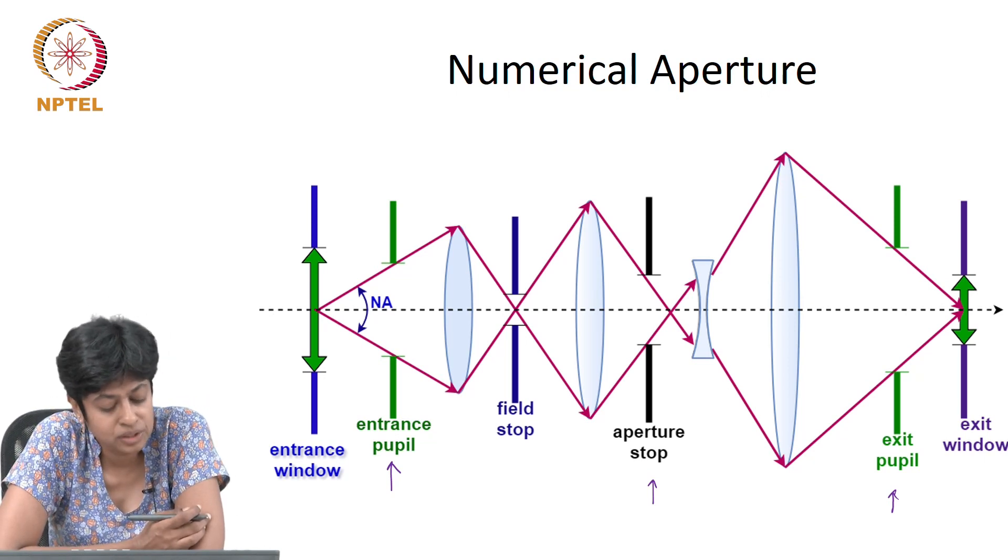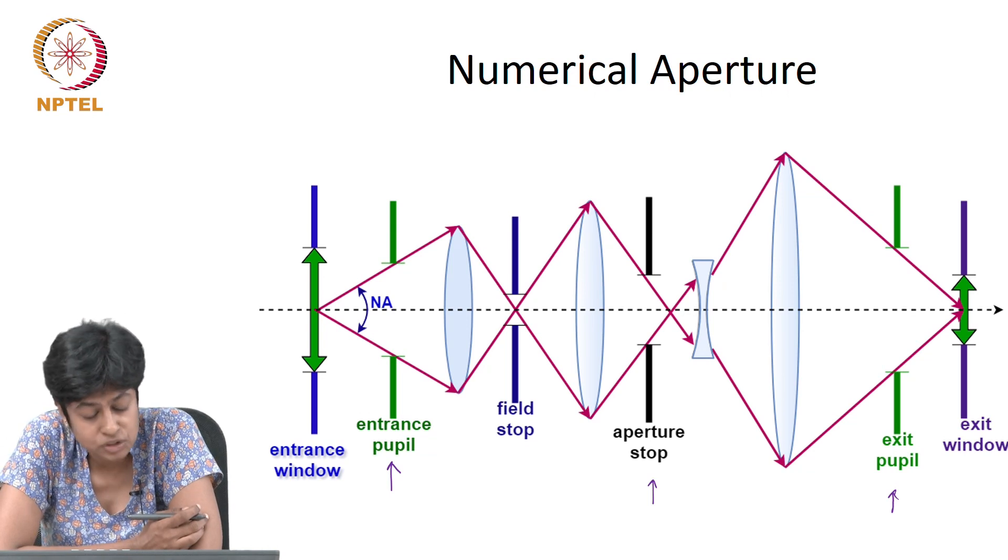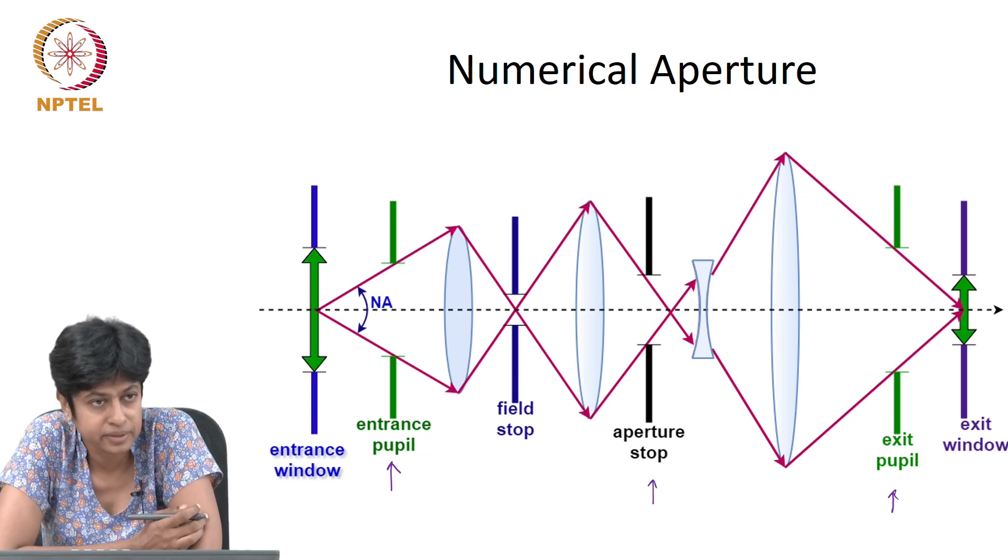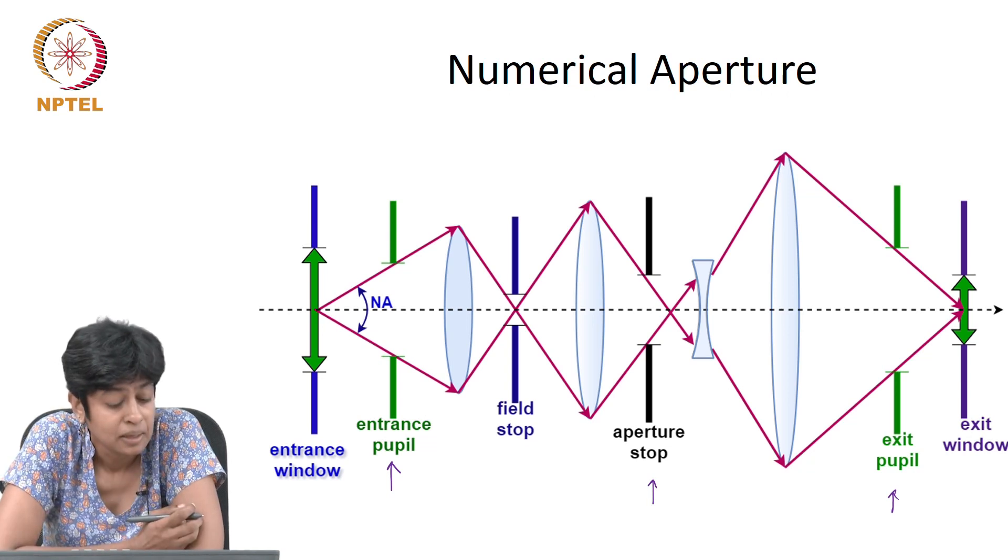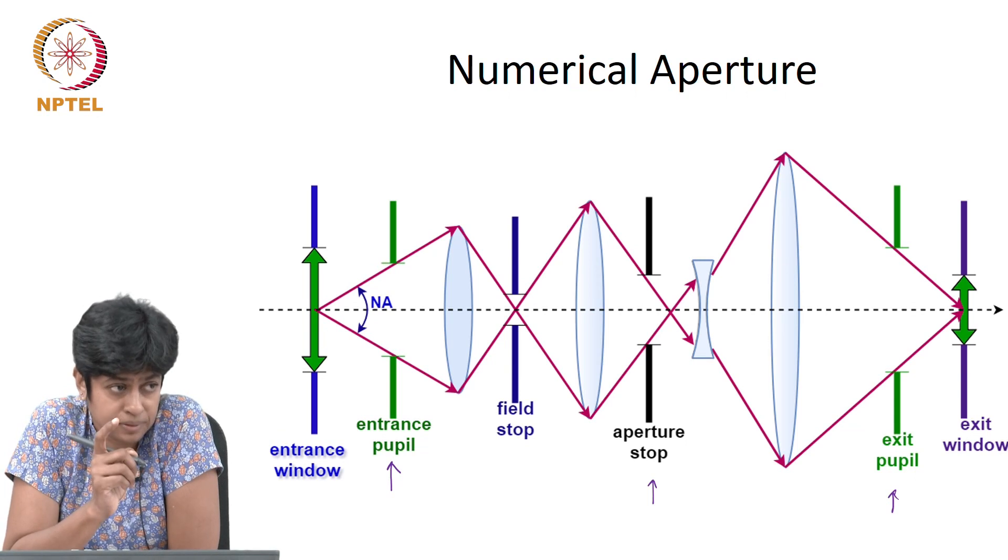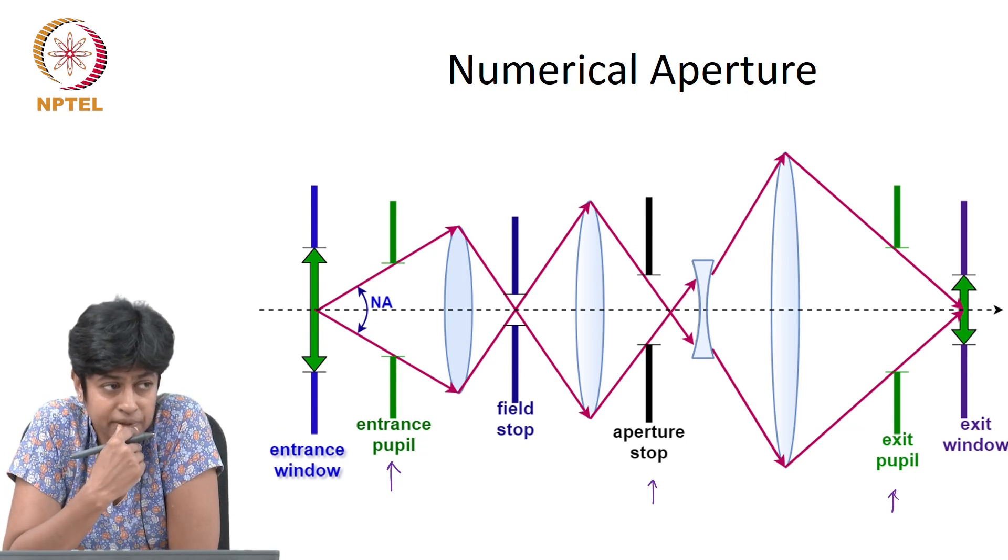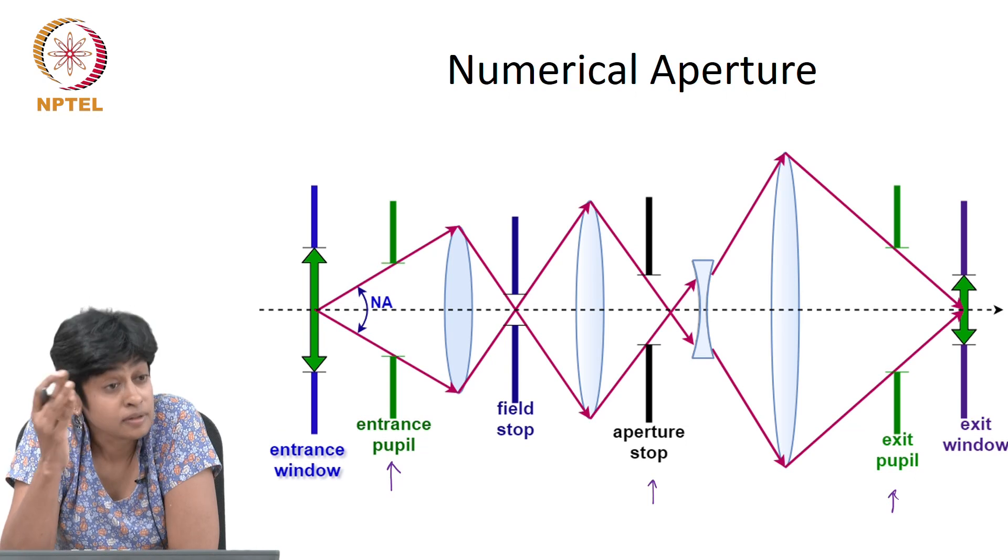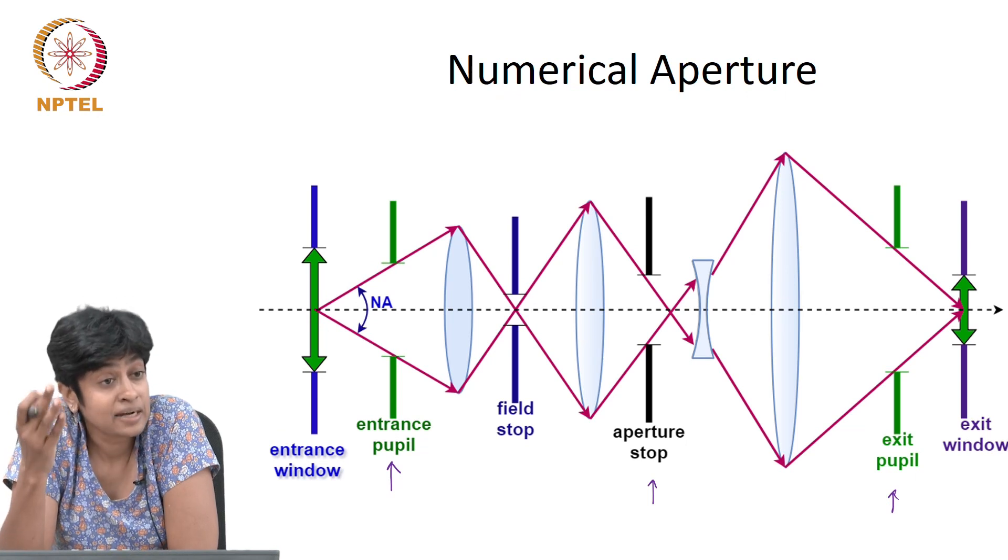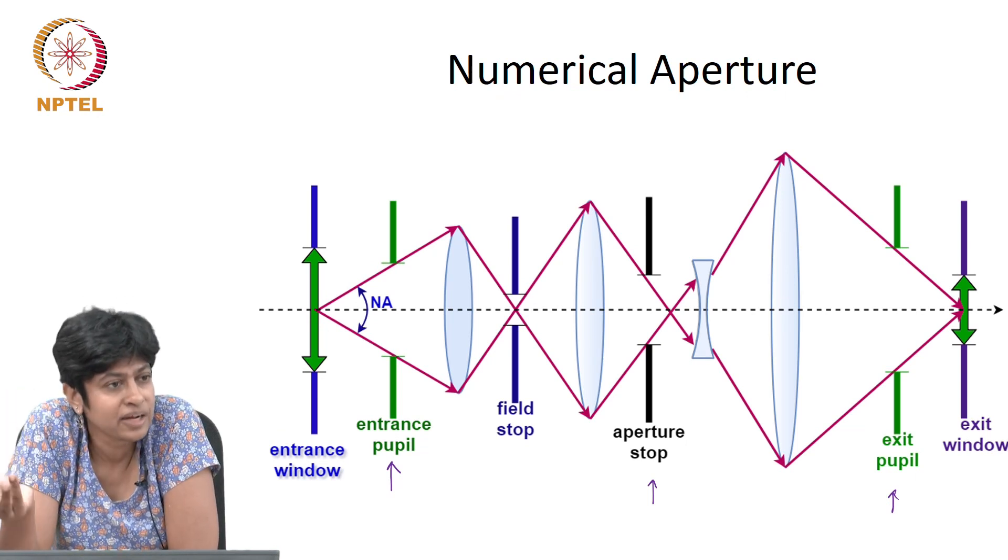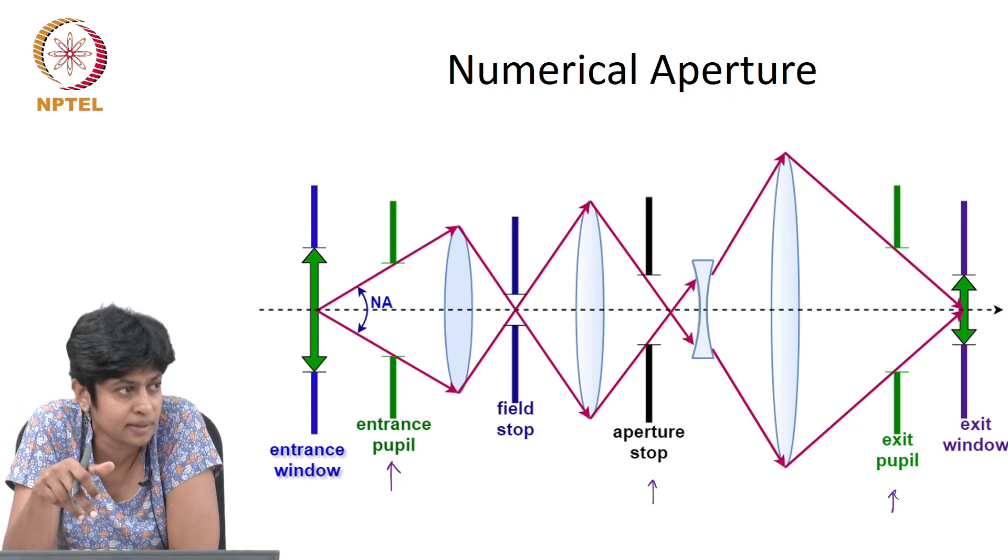But there are some more terms over here. They include the field stop and the entrance window and the exit window, and they have exactly the same definition, except now you are not talking about the rays coming from the object point on axis, but the rays coming from the extreme points. We talked about the field stop earlier. Do you remember what we defined the field stop as? It was we drew the plane at where the image was formed, and we said if that plane or that screen or the detector or the device that is capturing the image is smaller than the image—it may be a perfectly focused image—but if that device is smaller than the image, then you only capture what falls on the detector.